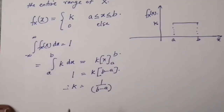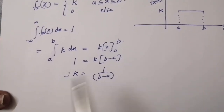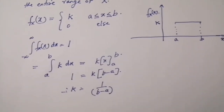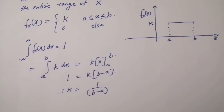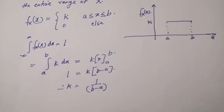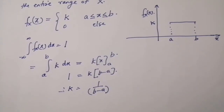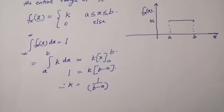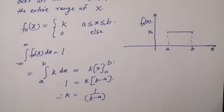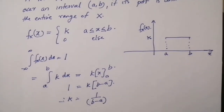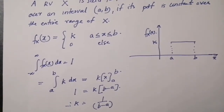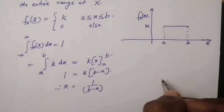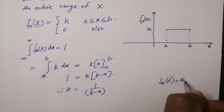Therefore k equals 1/(b − a). Applications of uniform distribution include: random errors introduced in the round-off process, which are uniformly distributed. In digital communication, quantization error is considered uniformly distributed. Another example is that the power spectral density of white noise also follows uniform distribution: S_X(f) = N₀/2.